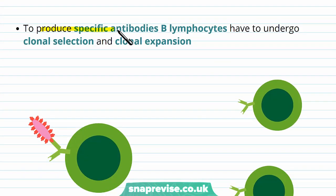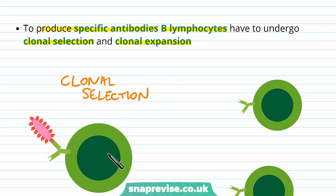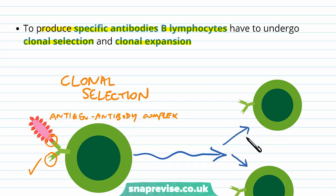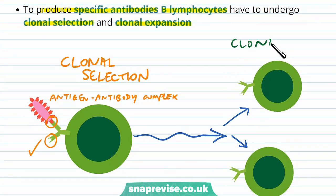To produce the right antibodies, the B lymphocytes have to undergo first clonal selection and then clonal expansion. In clonal selection, among all of the B lymphocytes in the body, the one with the correct antibody binding site is chosen because it will come across the pathogen, bind together to form an antigen-antibody complex, and so this B lymphocyte has been selected for. Once this has happened, with help from other cells, it then divides by mitosis to form an army of these B lymphocytes — this is clonal expansion. Both of these processes lead to many cells making this specific antibody, but it's going to take time.